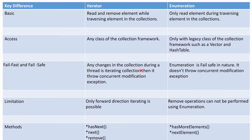If any changes occur in the collection during iteration — while a thread is iterating the collection — Iterator throws a ConcurrentModificationException, so Iterator is fail-fast in nature. Enumeration does not throw a ConcurrentModificationException, so it is fail-safe.